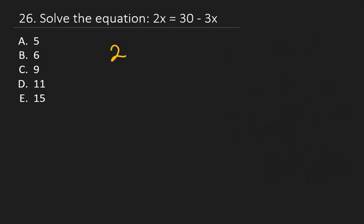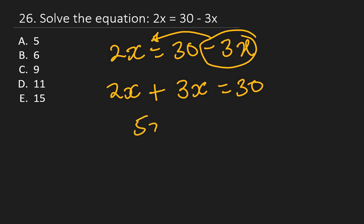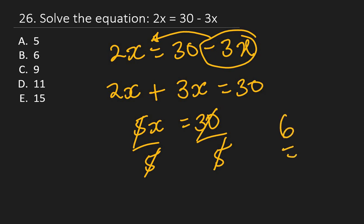Question 26: Solve the equation 2x = 30 − 3x. Collect like terms by moving −3x to the left: 2x + 3x = 30, so 5x = 30. Divide both sides by 5: x = 6. The right answer is B.